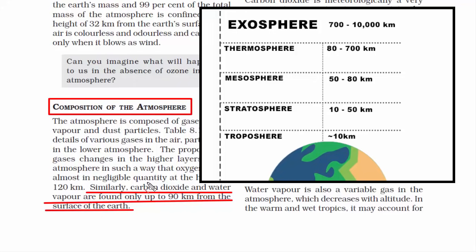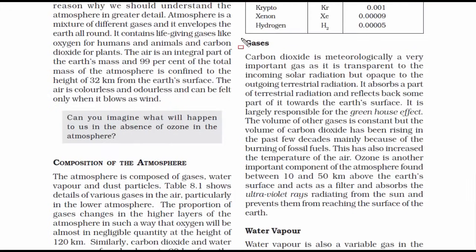So when it says carbon dioxide and water vapor are found only up to 90 km from the surface of the earth, it means that carbon dioxide and water vapor exist till the initial boundary of thermosphere. I hope this part is clear now. Now let's read about this topic, gases.